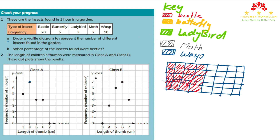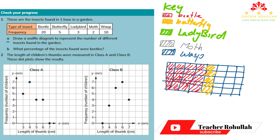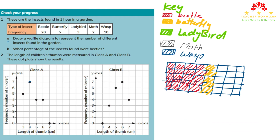I shade five parts orange for butterfly. For ladybird I choose green and place the three ladybirds on the right side. For moth I chose black and shade two squares. For wasp I chose dark blue and shade 10 grid parts — five in one row and another five in the next column.